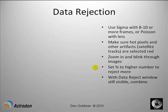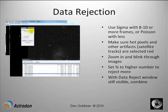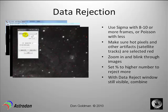Now, data rejection — we could spend an entire hour on this, but we'll go through it quickly. In CCD Stack, go to data reject procedures. If you have enough frames, use some type of sigma reject. If you have fewer than about 8 to 10 frames, use a more aggressive type called Poisson rejection. This process marks all bad pixels — cosmic ray hits and hot pixels — which should not appear in the same location across different images if you've dithered. You can see after sigma reject that a hot pixel is marked in red and will not be included when we combine. Going to the next frame, it's gone — you can see that by going back and forth.